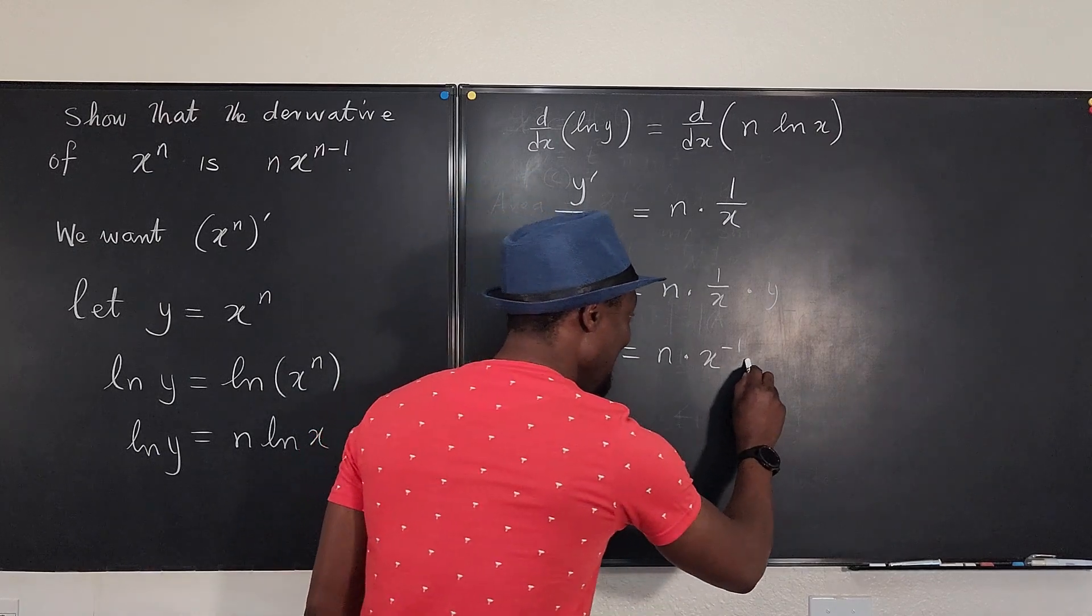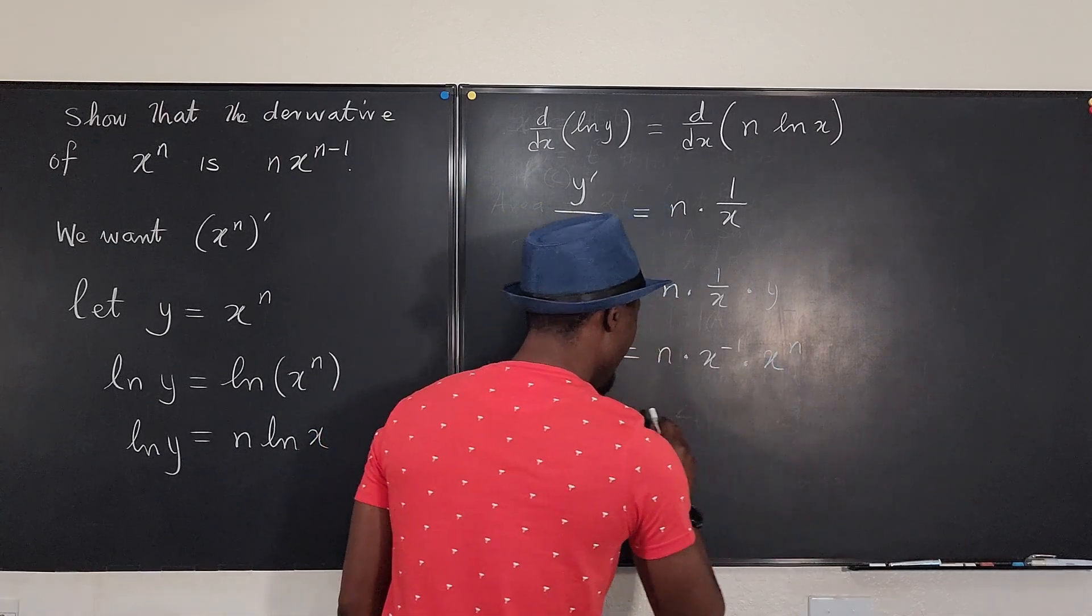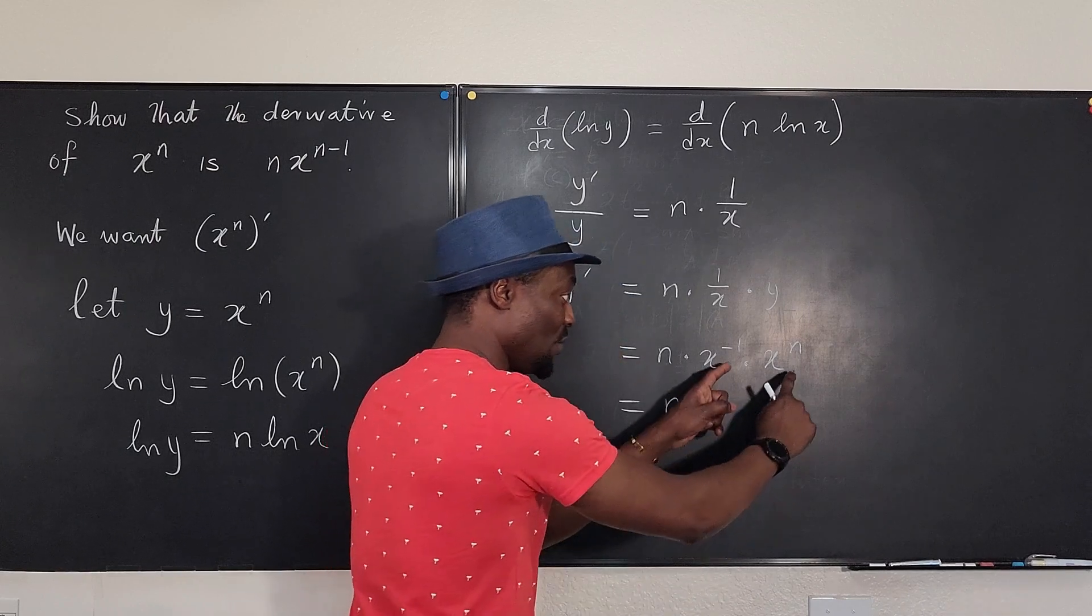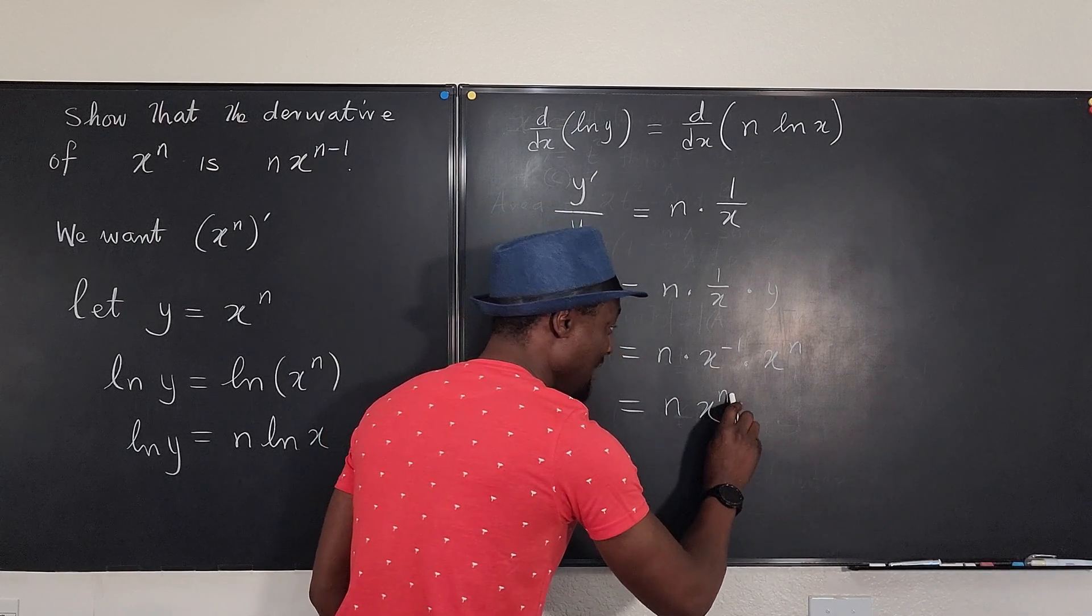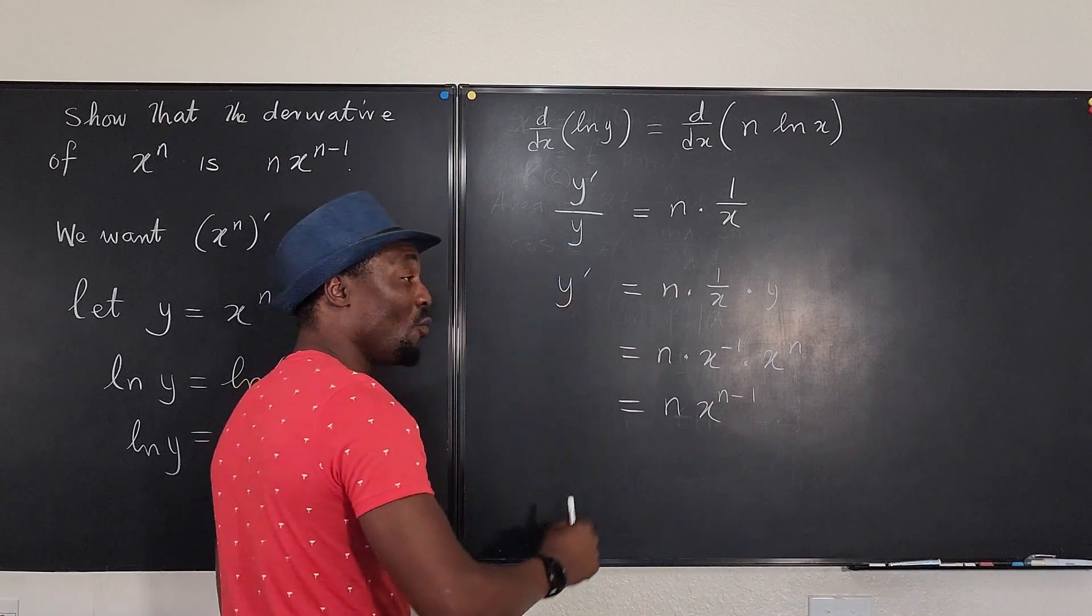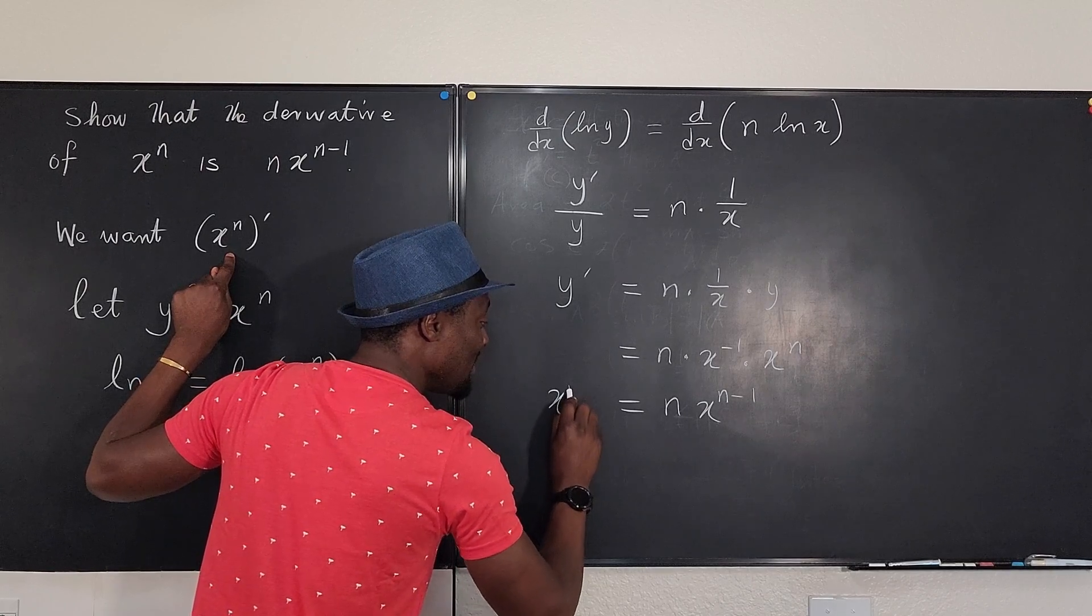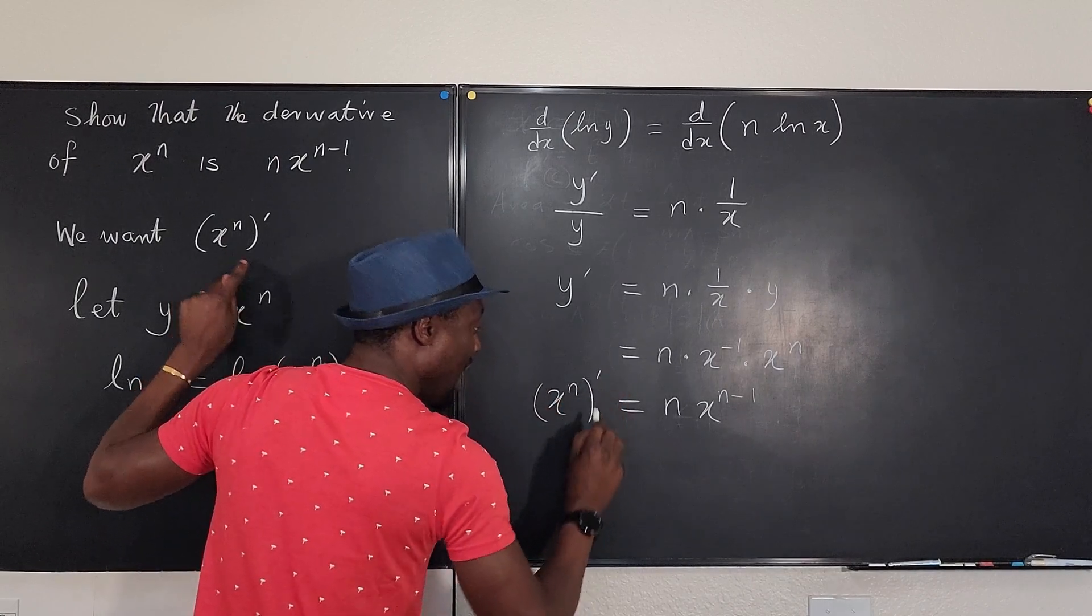So times x^n. Ladies and gentlemen, this is n times x raised to—you add these two exponents together, you get n minus 1. And what is y? We said y was x^n. So this is what we want: (x^n)' = n·x^(n-1).